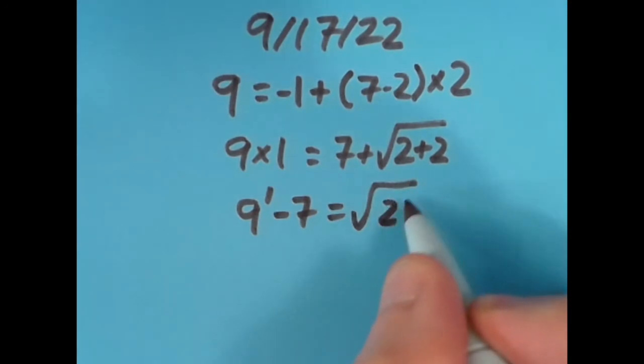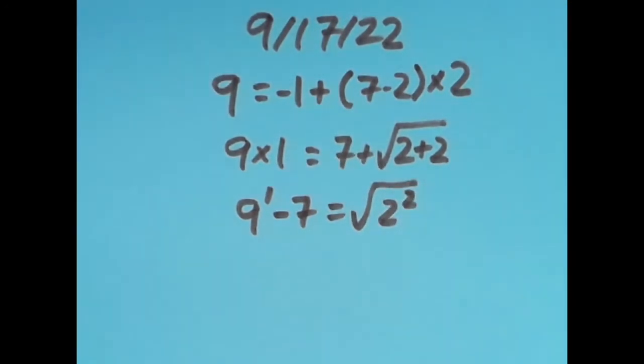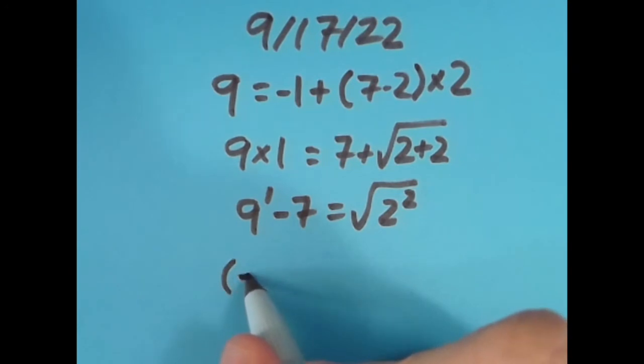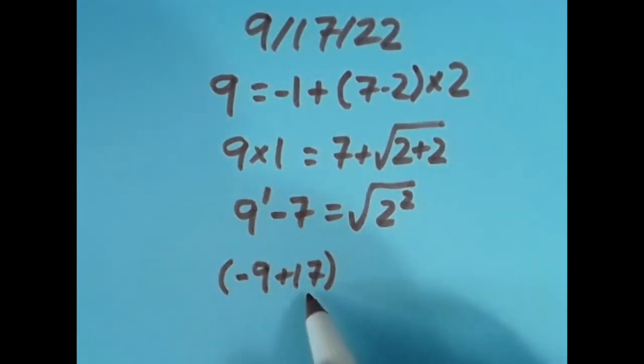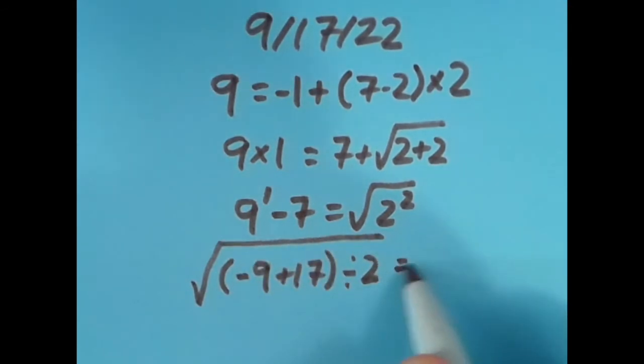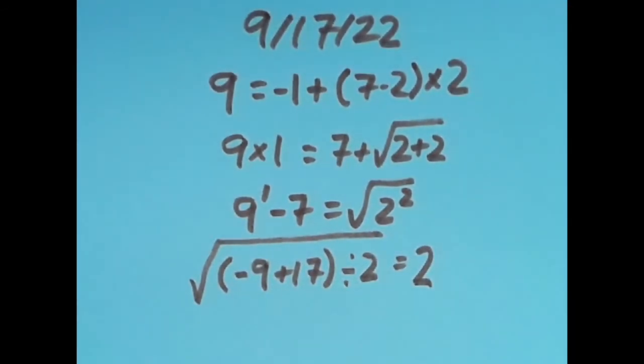Then I did it again one last time with the equal sign all the way to the right. And for this one I wanted to do negative 9 plus 17 first, so this gives us positive 8. Then I want to take all of that 8 and divide it by 2 to get 4, and the square root of that 4 equals 2.